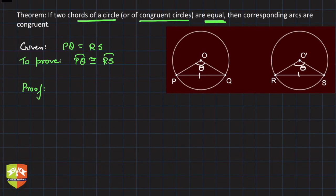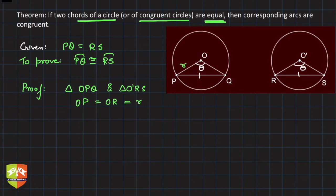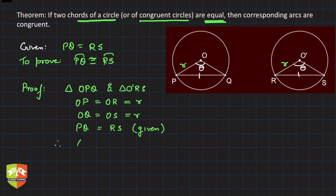In triangle OPQ and triangle O'RS, what do we have? OP is equal to OR, both equal to radius R. Similarly, OQ is equal to O'S, also equal to R. And PQ is equal to RS — this was given. Therefore, triangle OPQ is congruent to triangle O'RS by the SSS congruence criterion.